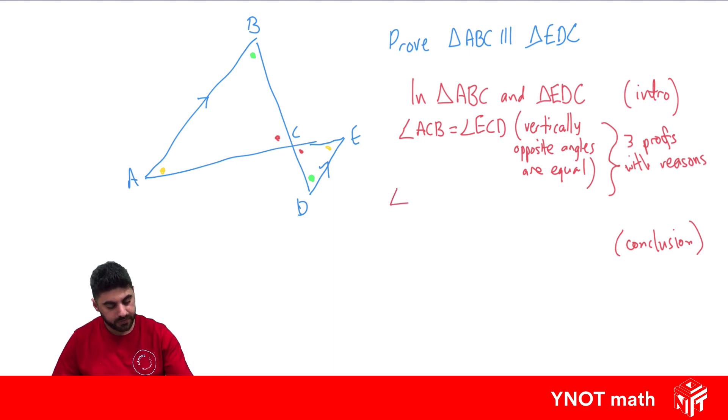We can say that angle ABC equals angle EDC. It's important when we name our angles that the letter in the middle is where the angle's at. The green ones are B here, so B is in the middle, and the green ones are D, and D is in the middle. The reason is that alternate angles on parallel lines are equal.